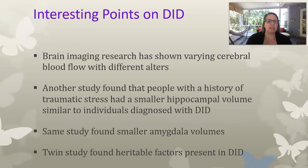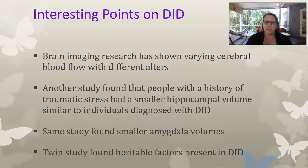Some interesting research findings on dissociative identity disorder: brain imaging shows different blood flow in the brain with different alters, which is one of the things trying to demonstrate that DID is an actual mental illness. Another study found that people with a history of traumatic stress had a smaller hippocampus, similar to individuals diagnosed with DID, as well as a smaller amygdala. Studies in twins also showed that there is a heritability factor present in dissociative identity disorder — meaning it can genetically run in families.